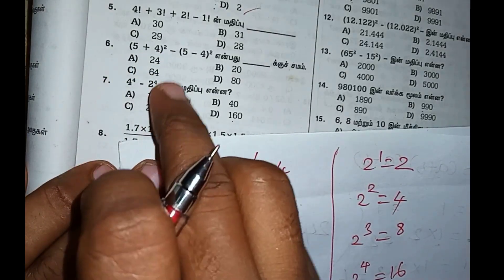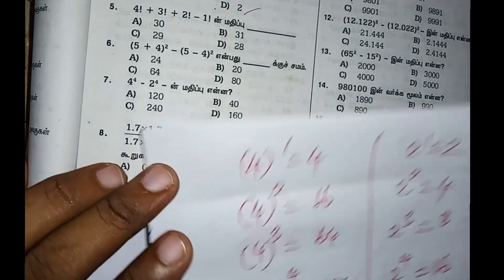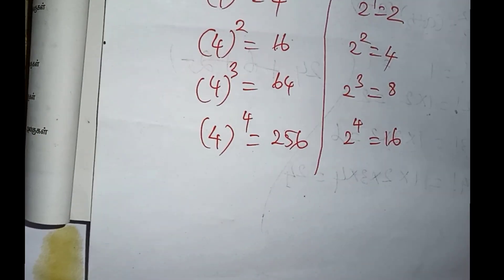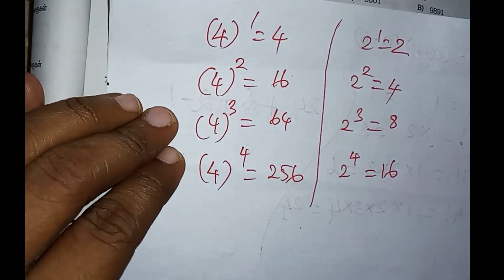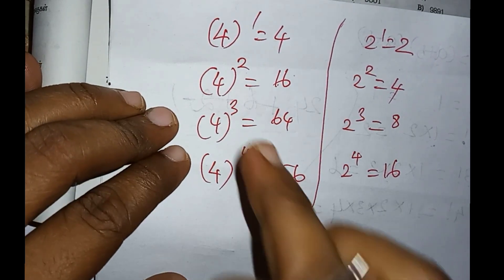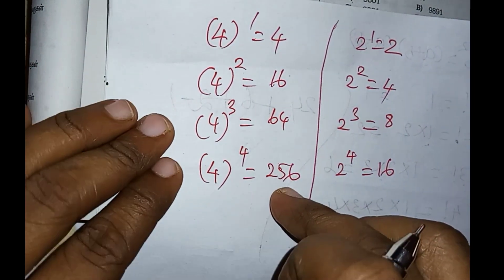So 4 power 4 minus 2 power 4 equals. Power values are very easy to solve. 4 power 1 value is 4, 4 square value is 16, 4 cube value is 64, 4 power 4 value is 256.